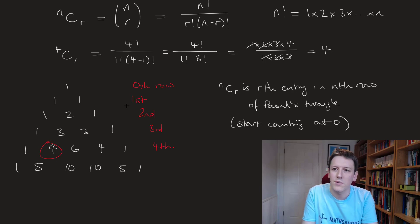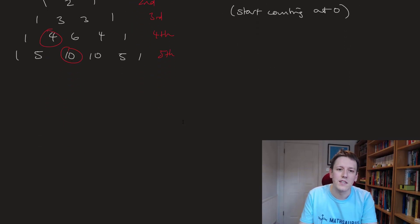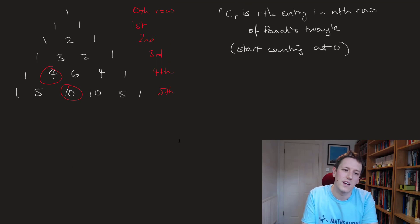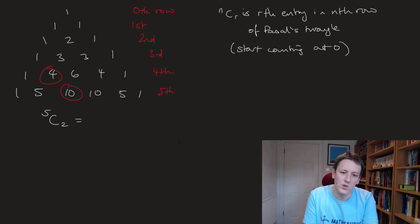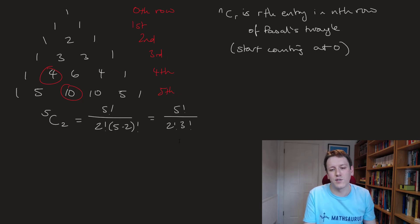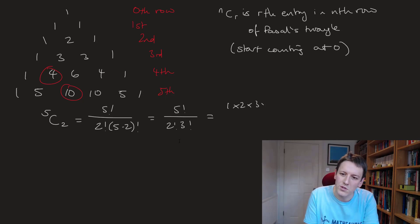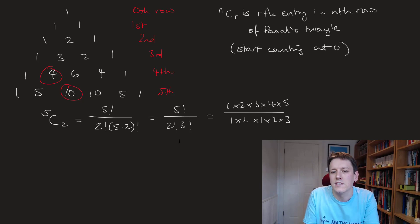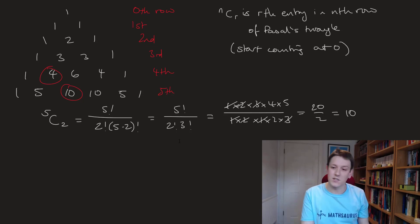Let's find another one: the next row is the 5th row. Say I wanted to work out this 10 — that would be the 2nd entry in that row, because the 0th is here, then the 1st, then the 2nd. So I've got 5 choose 2, which is 5 factorial over 2 factorial times 5 minus 2 factorial, so 5 factorial over 2 factorial times 3 factorial. That gives 1 times 2 times 3 times 4 times 5 over 1 times 2 times 1 times 2 times 3, and after cancelling I get 4 times 5 over 2 = 20 over 2 = 10, exactly as expected.